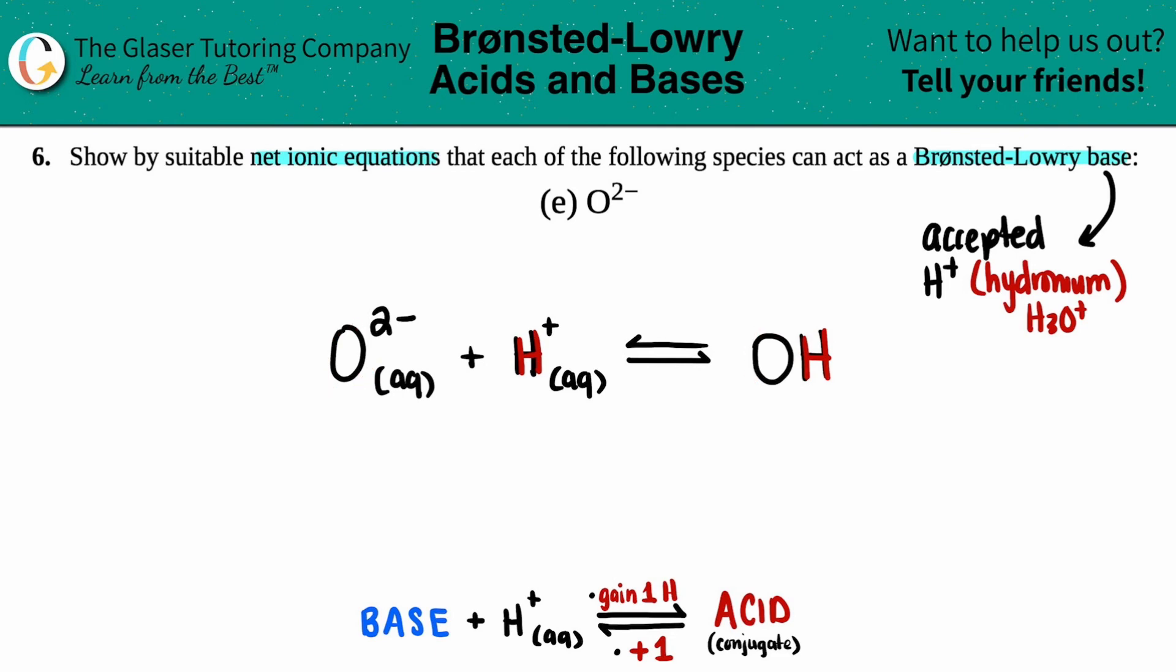Now I just need to make sure I have the right charge. When you're converting a base into an acid, you always add plus one. You plus one to the overall charge of what it was. The oxygen was originally a negative two. So I say, okay, it was a negative two, but since I gained, or I accepted that H plus, I have to plus one. Negative two plus one is negative one.